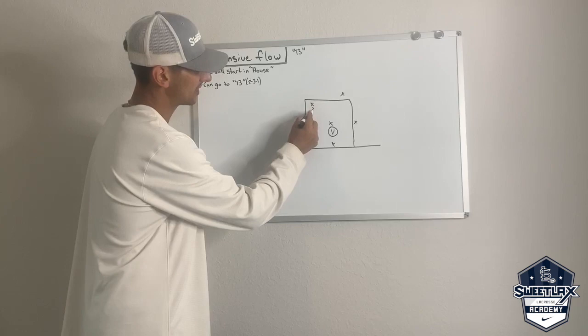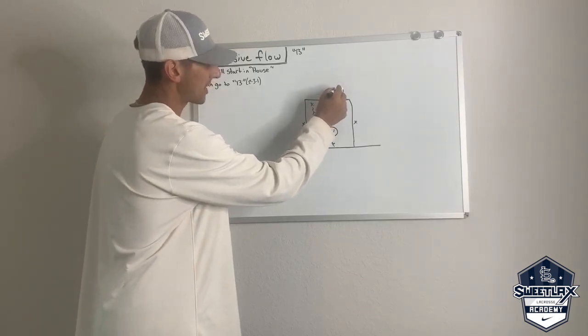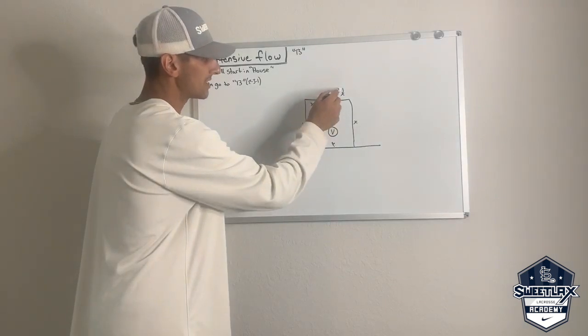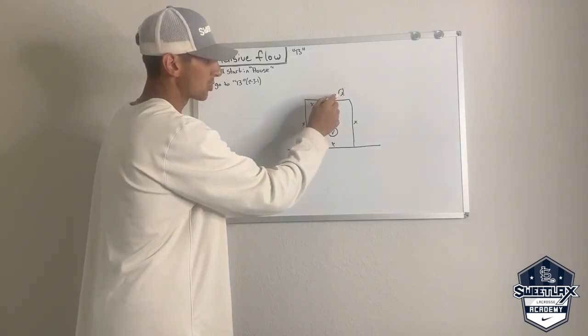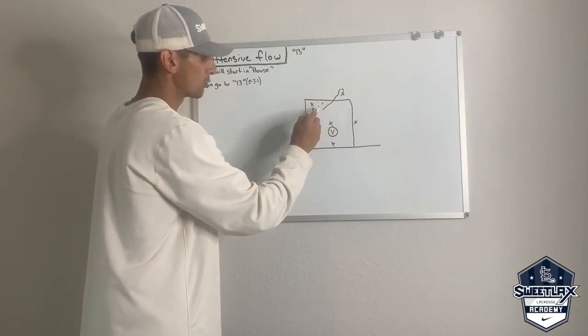So if this guy tilts it for Jimmy and passes it up, and we say hey Jimmy, burn it, Jimmy is dodging, hard to score, really selling it to the entire defense, hopefully drawing a two slide.